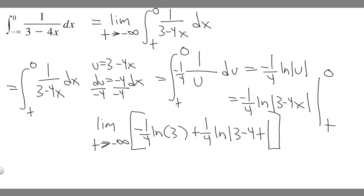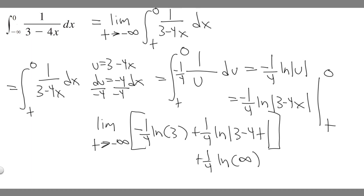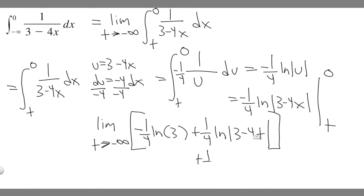So now we have to evaluate it as a limit — we replace t with negative infinity. Minus four times negative infinity: the negative signs cancel, so four times infinity is still infinity. Then three plus infinity is still infinity. The absolute value of infinity is positive, so we have plus one over four times the ln of infinity. The ln of infinity is still infinity, and even multiplying by one over four it's still infinity — because we keep going bigger and it's still going to be a really big number. So if we plug in negative infinity, this whole term goes to infinity.